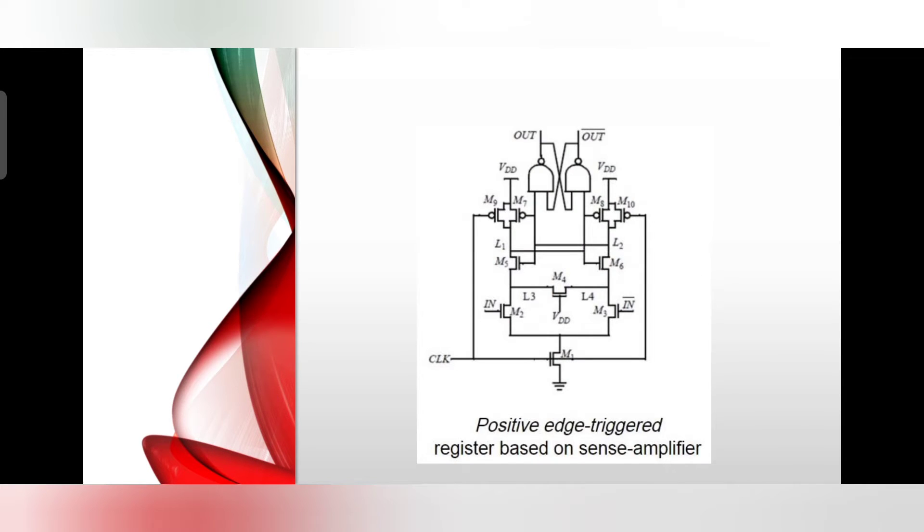The circuit shown in the figure uses a precharged front-end amplifier that samples the differential input on the rising edge of the clock. The outputs of the front-end are fed into a NAND cross-coupled SR flip-flop that holds the data and guarantees that the differential outputs switch only once per clock cycle.